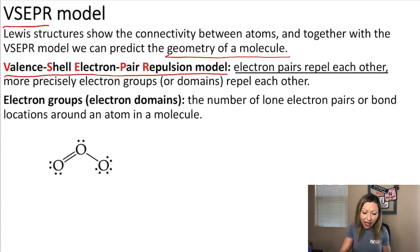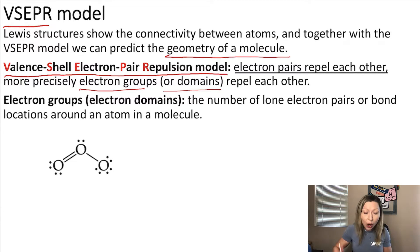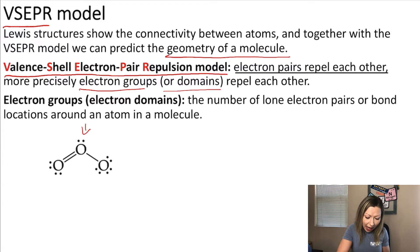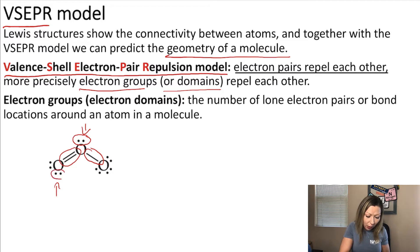More precisely, when we have electron groups or so-called electron domains, they are going to repel each other. So what is an electron domain or an electron group? We have to count how many lone pairs and bond locations are around an atom in a molecule. If we look at the central oxygen atom in ozone, we have one lone pair, a single bond, and a double bond — so three electron groups around the middle oxygen atom. The other oxygen atom also has one lone pair, another lone pair, and a double bond — again, three electron groups.